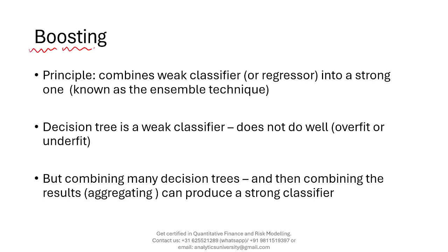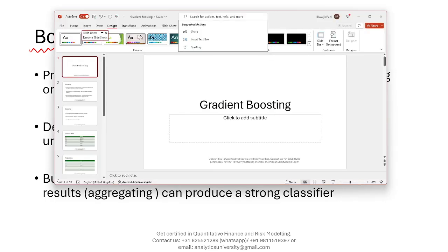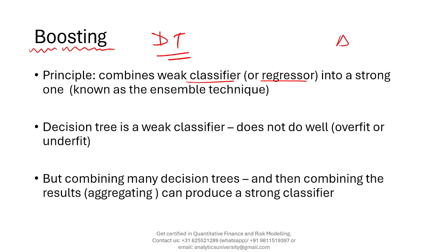Boosting is a way of combining weak classifiers or regression models — weak models. A decision tree model is a weak model. It's easy to build and easy to explain, but the problem is that predictions are not that great. The prediction accuracy may not be very high, and it can sometimes overfit or underfit. The hypothesis behind boosting is that if you combine results from many decision trees, the performance is likely to be very good, without much overfitting or underfitting. Models like Random Forest also rely on the same hypothesis.